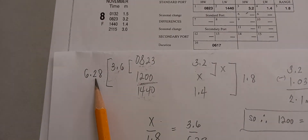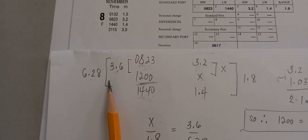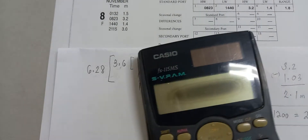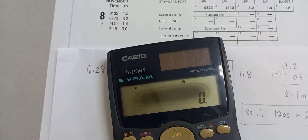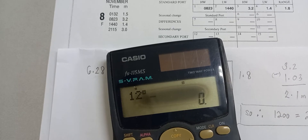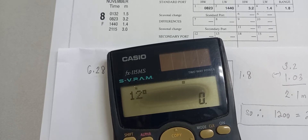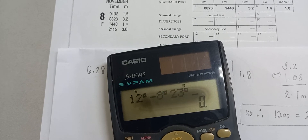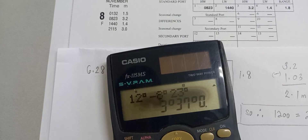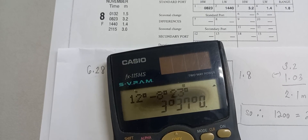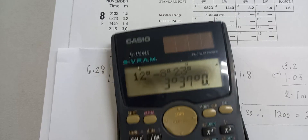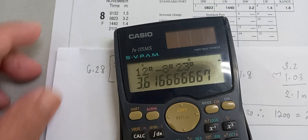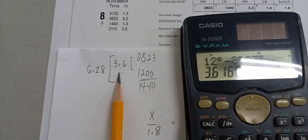To demonstrate using the calculator: input 1200 in degrees minus 0823 in degrees — it gives you 3 hours and 37 minutes. Press the degrees button and it converts to 3.6 hours.